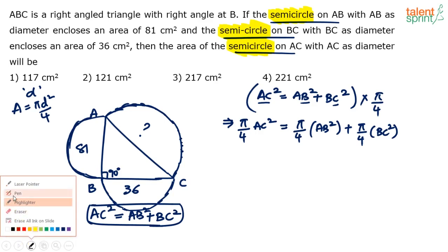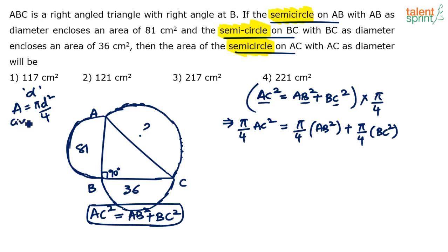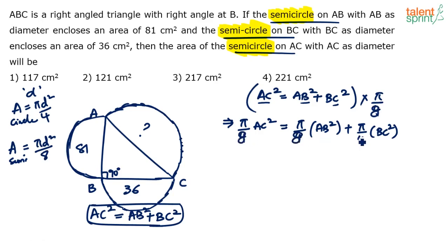For the circle, the area is π D squared by 4, but for the semicircle the area is π D squared by 8. So we should multiply by π/8, not π/4. The area of the semicircle on AC is π × AC squared by 8, because the area of the full circle with AC as diameter is π × AC squared by 4, and the semicircle is half of that.